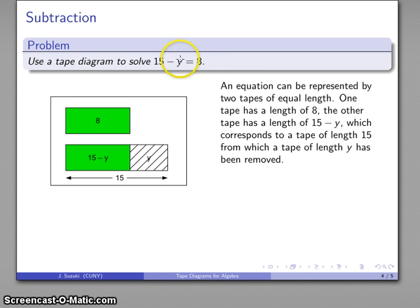That's gone. And what's left is my 15 minus y. And again, there's an equality there. So that says the tape of length 8 has the same length as the tape of length 15 minus y right there. And again, same question as before.